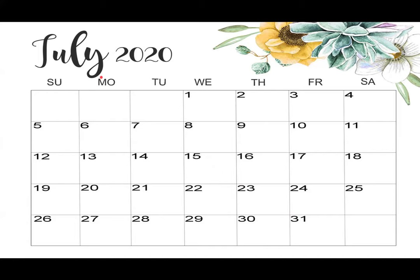We can also find out which day of the week July starts on. Let's see where number 1 is. Number 1 is under the 'We' column, which stands for Wednesday. So July is starting on Wednesday.